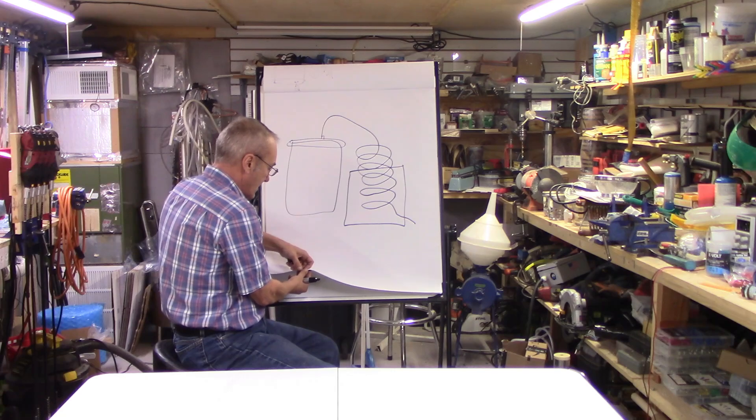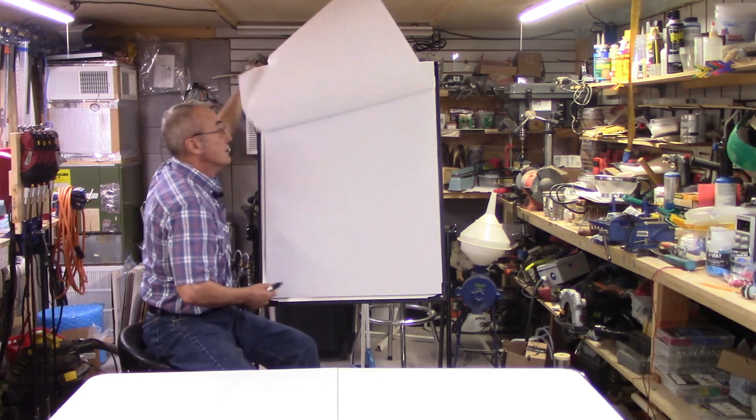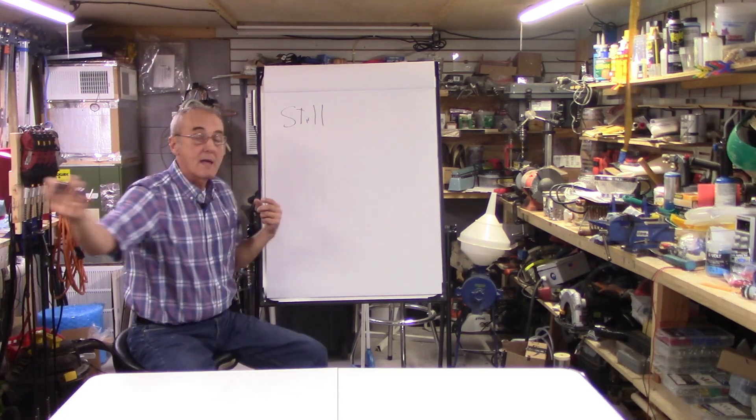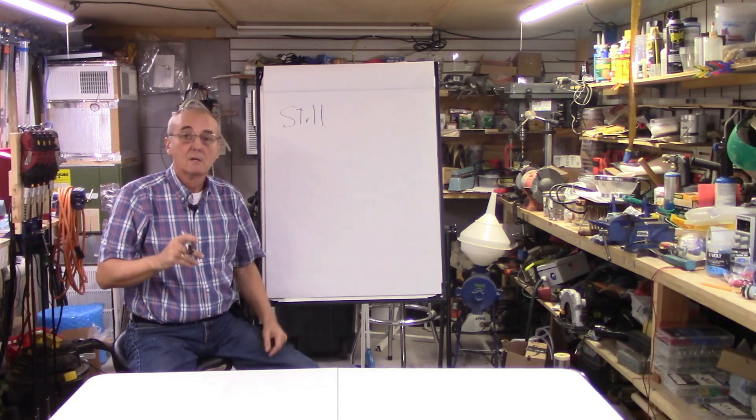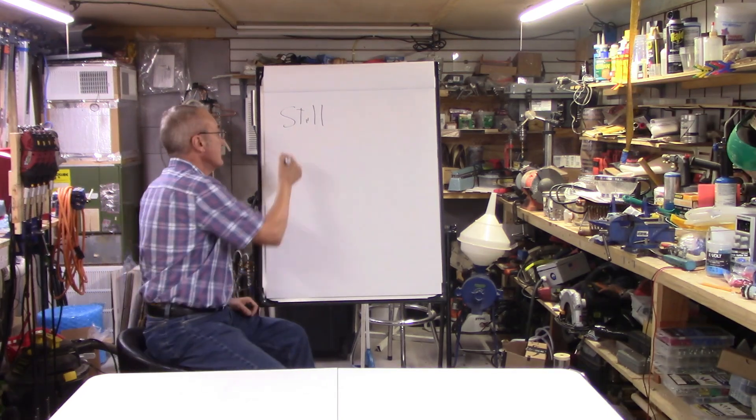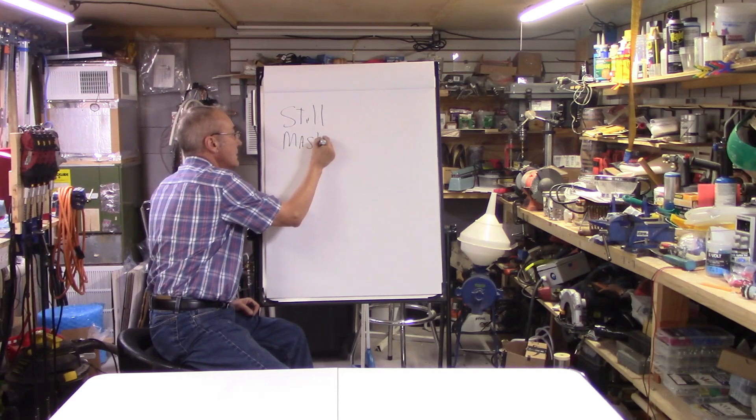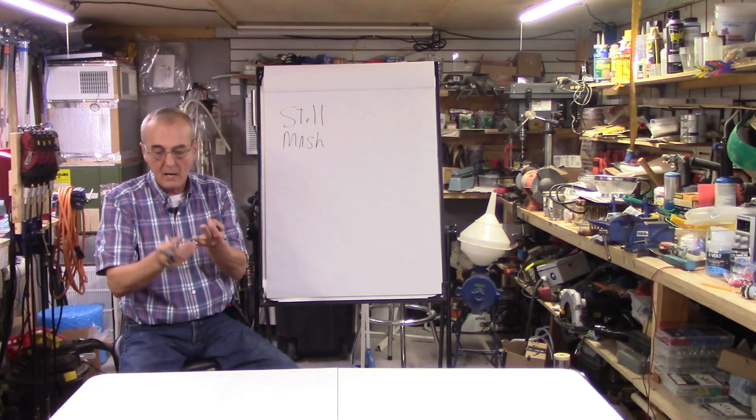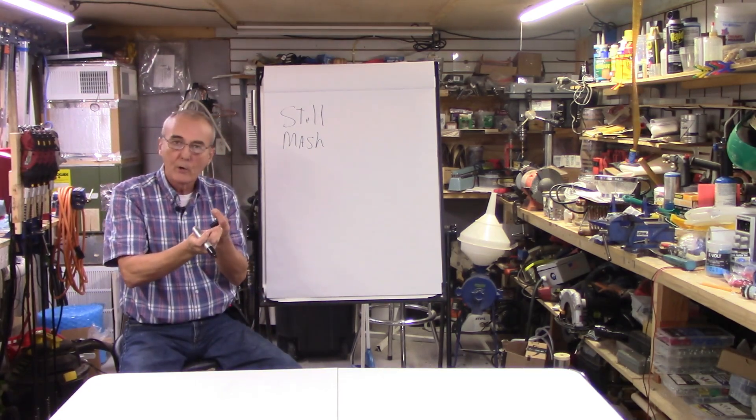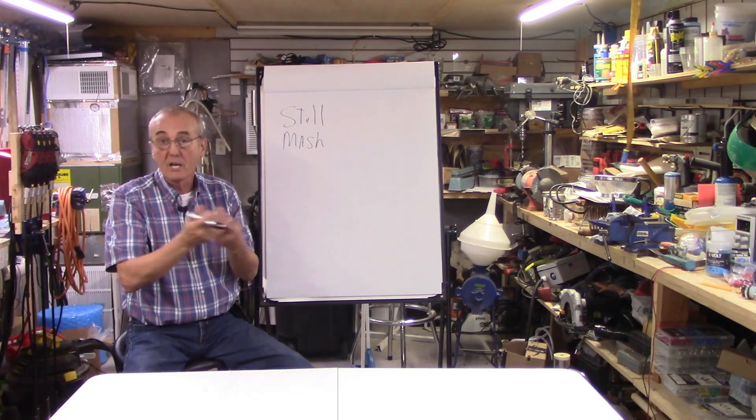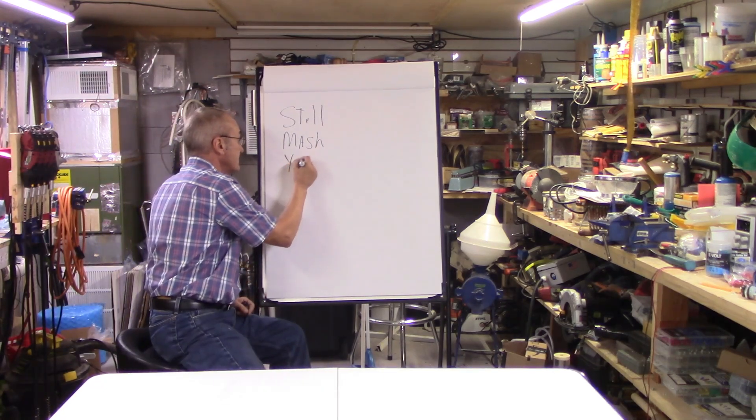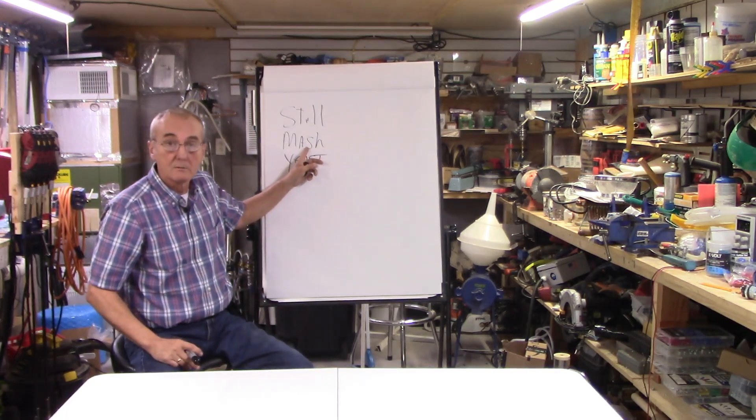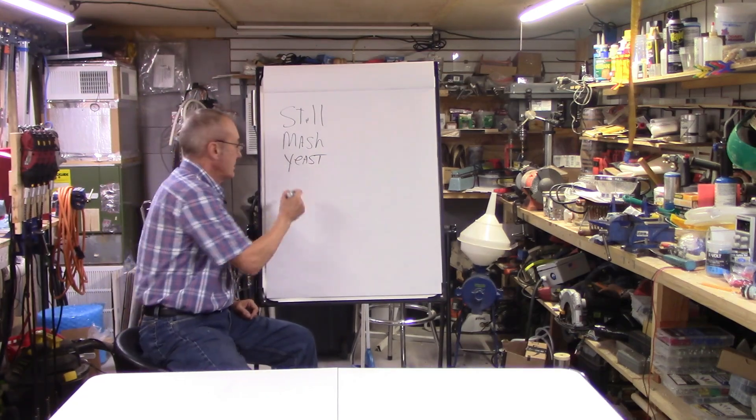So what do we need in order to run a still? We only need some basic items. One is we need a still, however you make that, however you buy that, whatever type you have. You need to be able to control it. You'll need a mash, and that will be a combination of grains, sugars, water, and then of course you're going to need yeast.